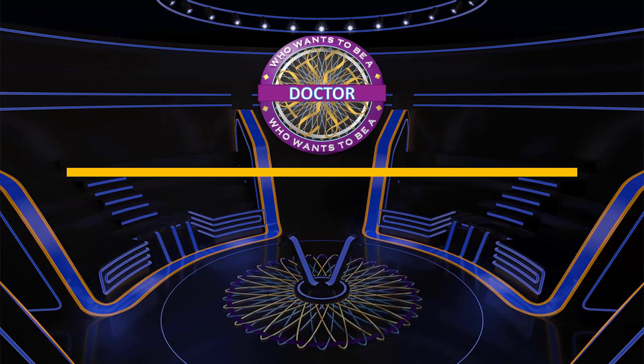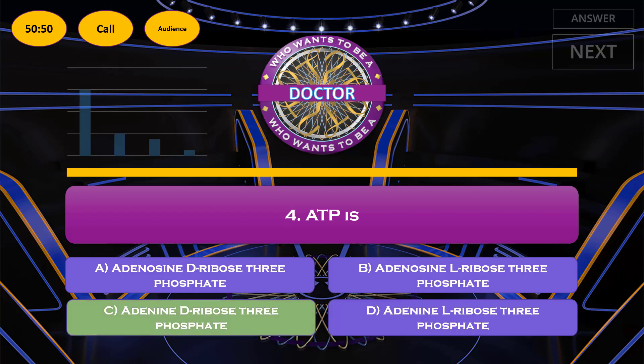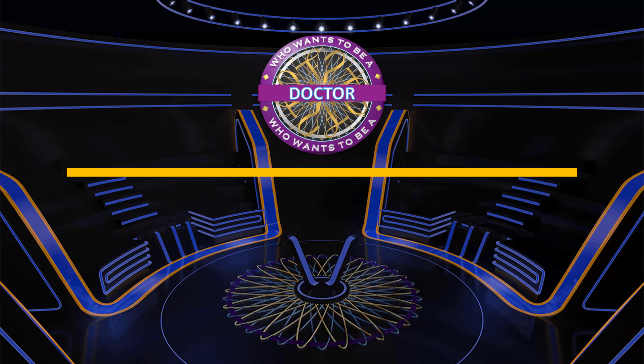The next question: ATP is — option A: adenosine D-ribose 3-phosphate; option B: adenosine L-ribose 3-phosphate; option C: adenine D-ribose 3-phosphate; option D: adenine L-ribose 3-phosphate. The correct answer is option C, adenine D-ribose 3-phosphate.